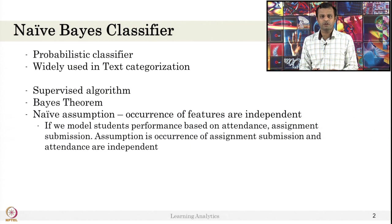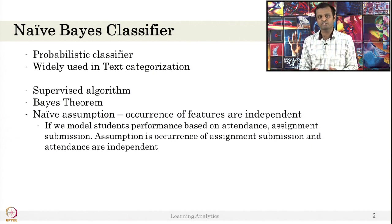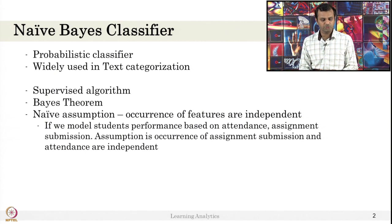You can think of other features like in a MOOC — a student logging in, a student interacting with the forum, a student watching a video — these are independent because not every student is going to interact with the forum or something like that. This assumption is the naive assumption in Naive Bayes theorem.